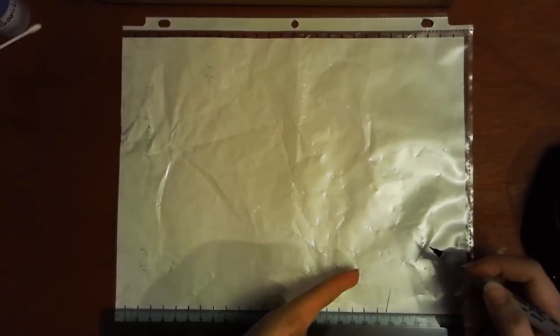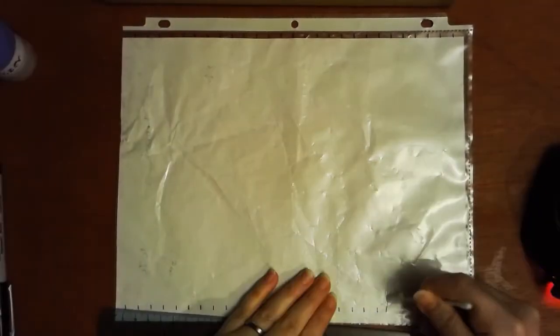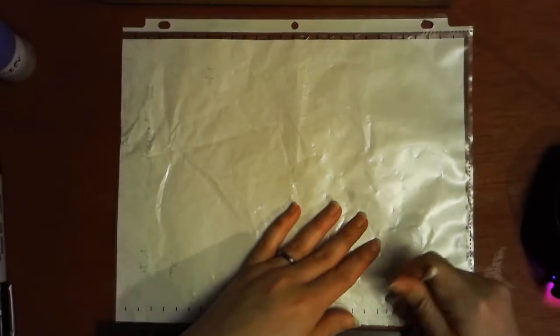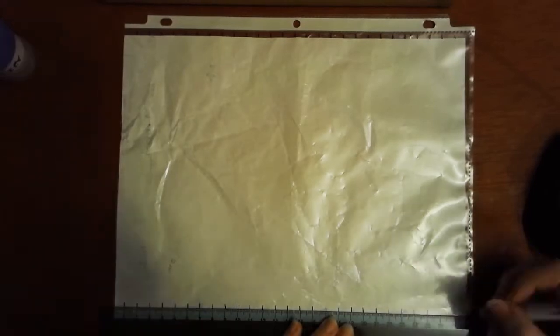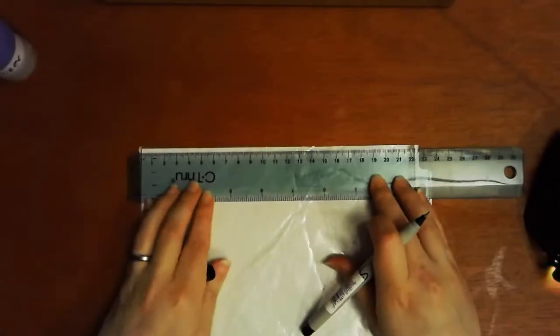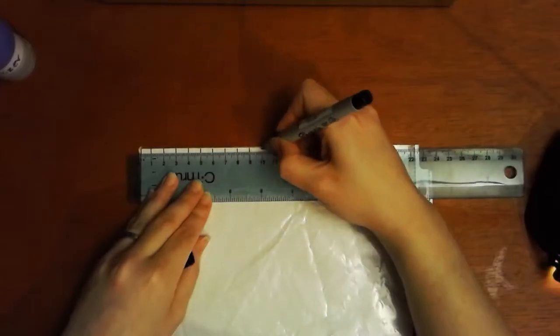Once you have that across the top, push your page up and do the exact same thing at the bottom. Please do not rotate your paper. Once you have the top and the bottom done, rotate once to complete the other two sides that you have not done previously, again making a mark at every one centimeter.